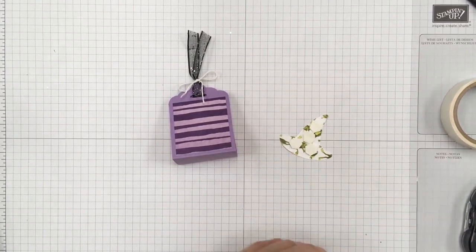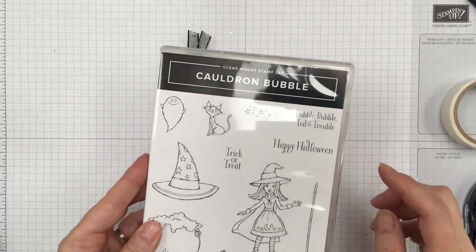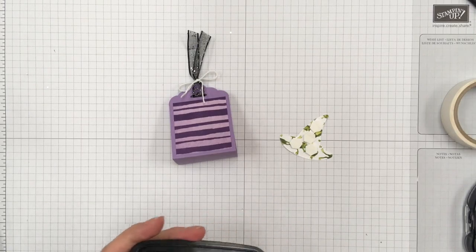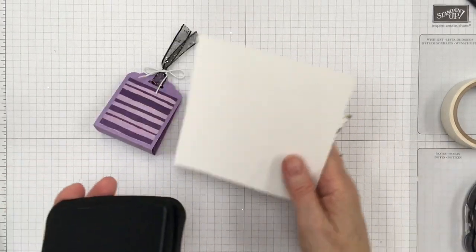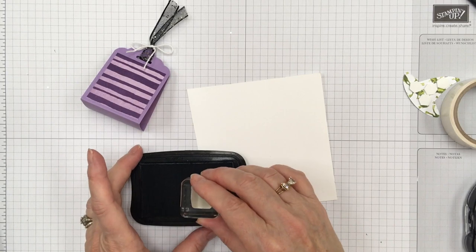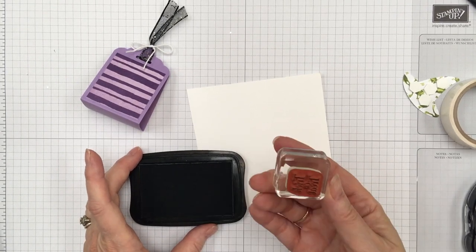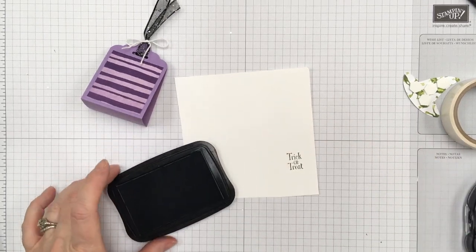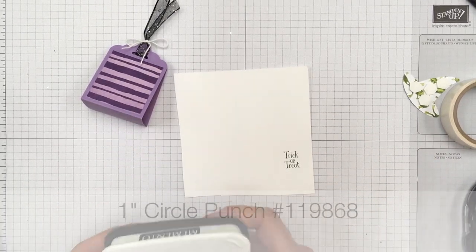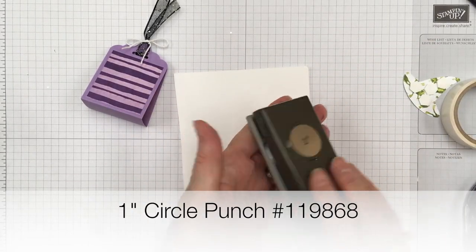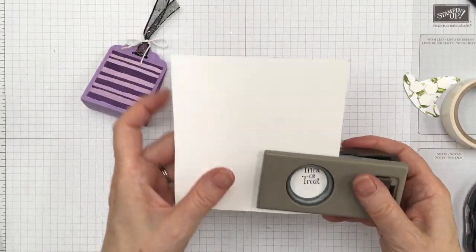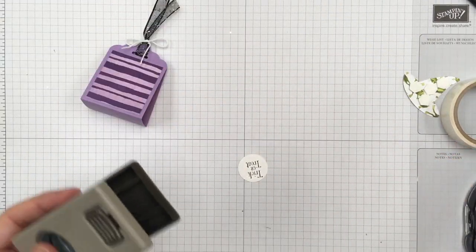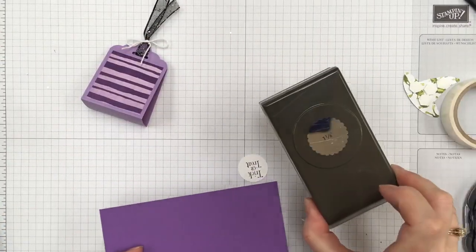All right, now I'm going to use, from that stamp set, I'm going to use Trick or Treat with some Memento ink. Bring in our Whisper White. I'm going to bring in the one inch circle punch, one inch, and just punch that out. And then some gorgeous grape with the one and one eighth punch.